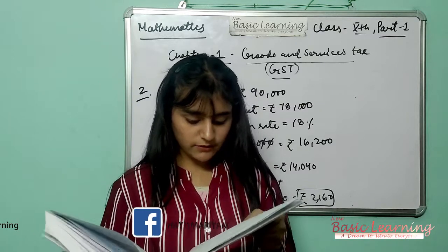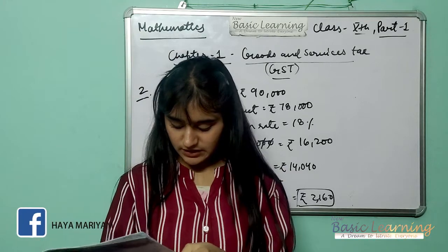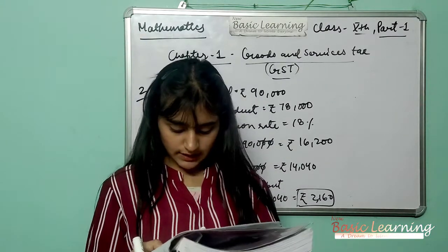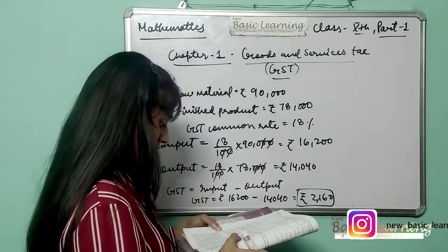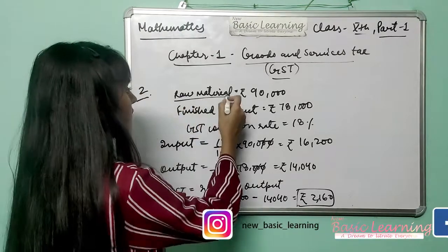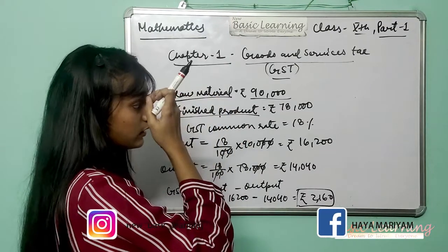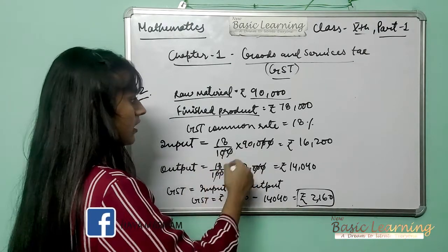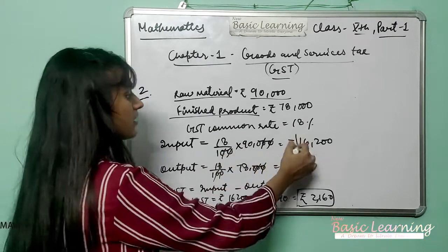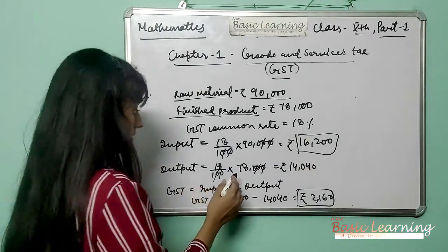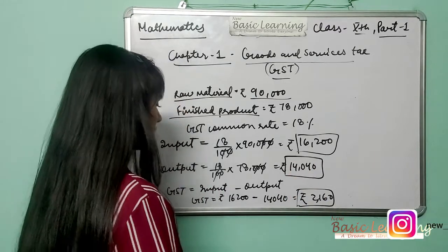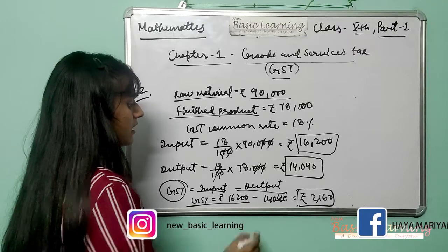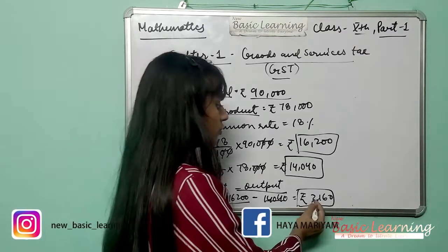The second question: A shoe manufacturer purchases goods worth Rs. 90,000 from the market within the state. He sells his product in the neighborhood market for Rs. 78,000. The common rate of GST is 18%. We calculate: Input GST = 18/100 × 90,000 = Rs. 16,200. Output GST = 18/100 × 78,000 = Rs. 14,040. GST credit = Input GST minus Output GST = 16,200 minus 14,040 = Rs. 2,160.